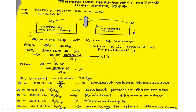We can say that at theta_t equal to 273.16 Kelvin, we get the value of the thermometric property as x_t centimeters — that is, the length of the mercury in the glass thermometer — where x_t is the length of mercury corresponding to 273.16 Kelvin, the triple point of water.